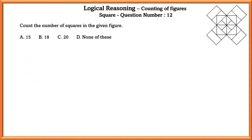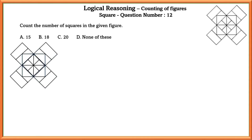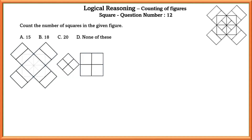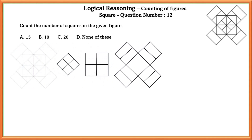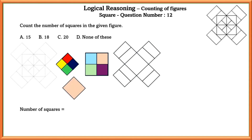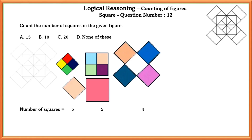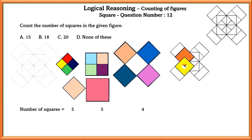Question number twelve: count the number of squares in the given figure. Similarly, we separate all figures into smaller ones for convenience. Counting, we get a total of 5 squares in each of the first and second figures. In the third figure we get 4 squares, and in the total combined figure we get another 4 squares. So the total number of squares equals 18.